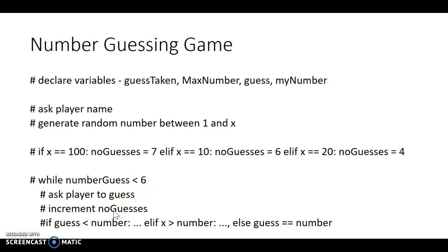I'm incrementing the number of guesses of the guesses taken field. And then I'm checking if guess is less than number or guess is greater than number or guess is equal to number. And each time reporting back higher, lower, higher, lower. OK. Just to give you a bit of a hand here.